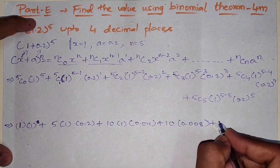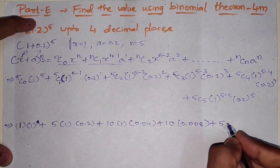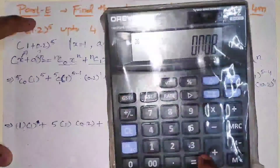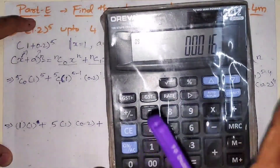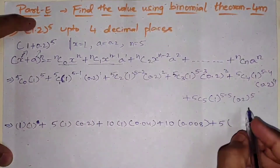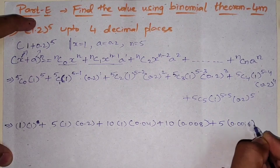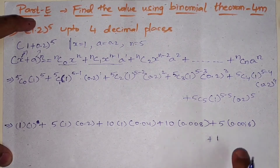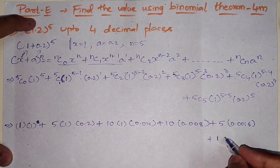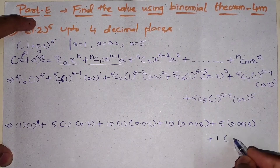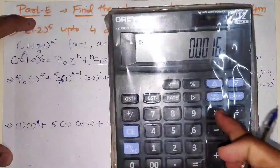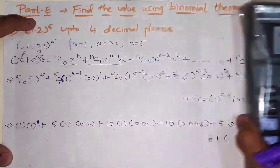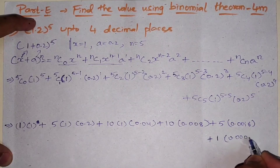Next, 5C4 equals 5. Then 0.2 to the power of 4: multiply 0.2 four times, which gives 0.0016. So that term is 5 times 0.0016 equals 0.008. Finally, 5C5 equals 1. And 0.2 to the power of 5: multiply 0.2 five times, which gives 0.00032. So the last term is 1 times 1 times 0.00032 equals 0.00032.